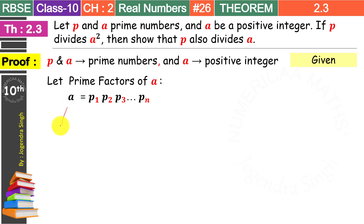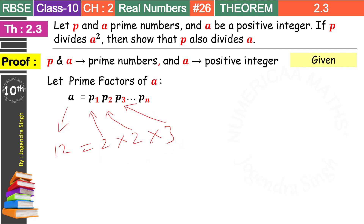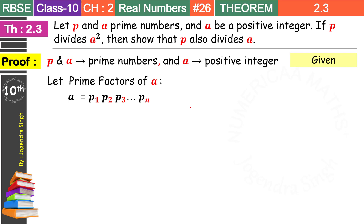Now what are these p's? We don't know what A is. A little while ago we took A as 12. Factors of 12 are 2 into 2 into 3. So this first 2 becomes p1, the second 2 becomes p2, and 3 becomes p3. Since we don't know the actual factors of A, we write them as p1, p2, p3 till pn. We also note on the side that these are prime numbers.